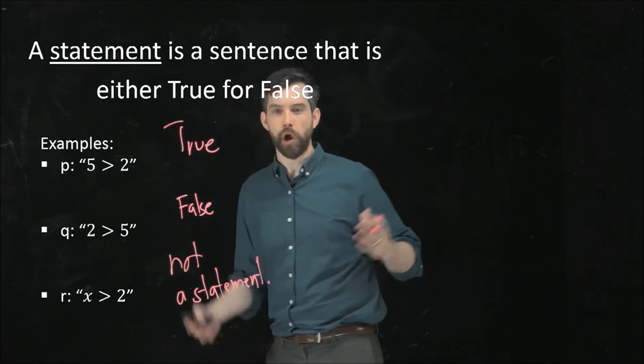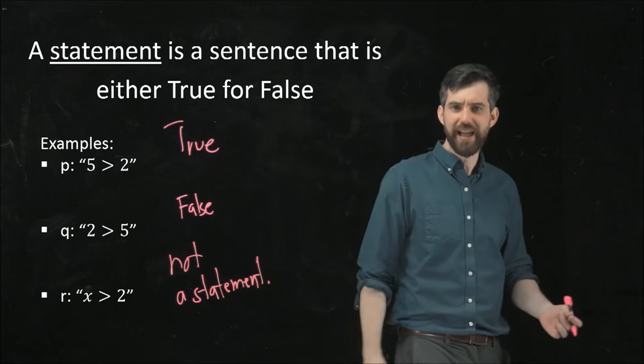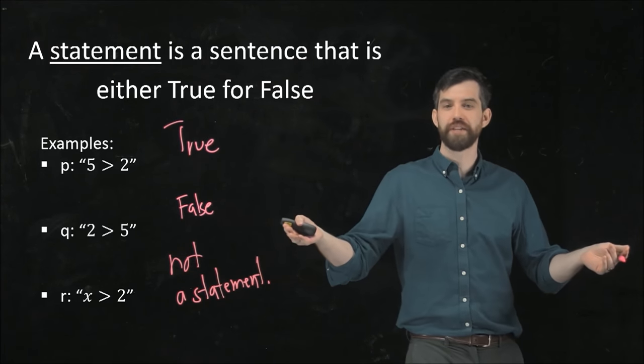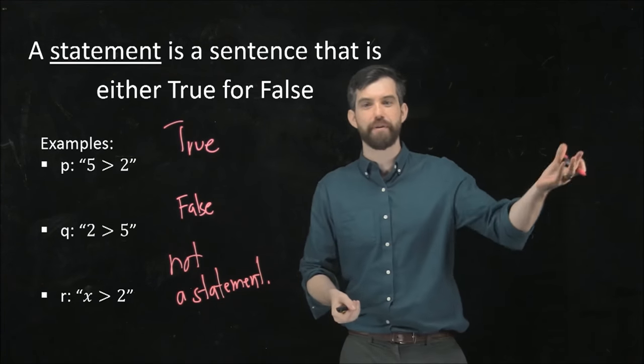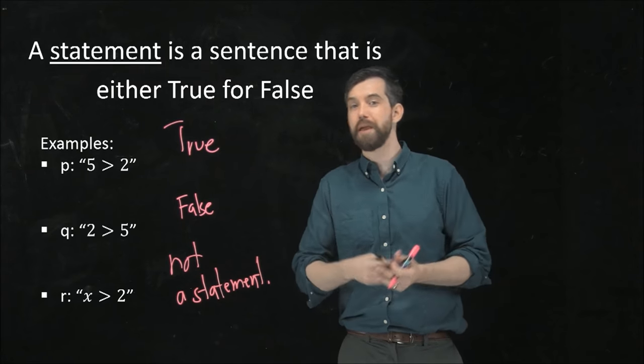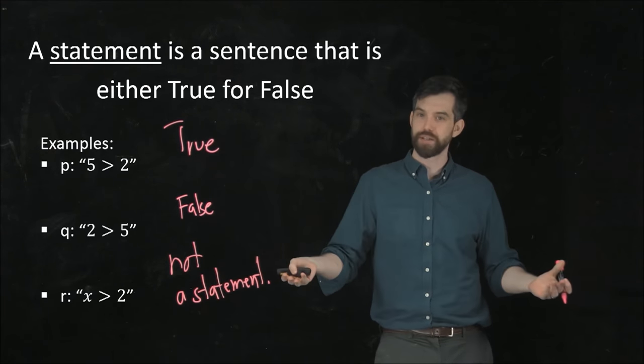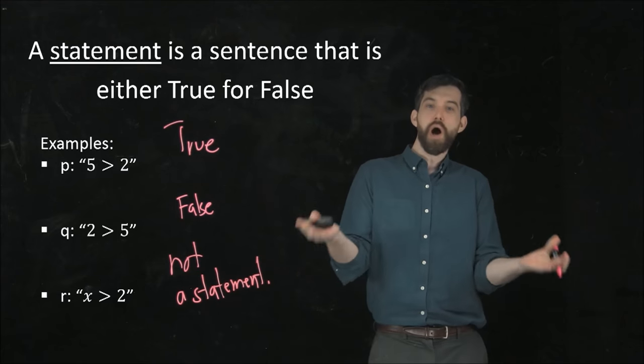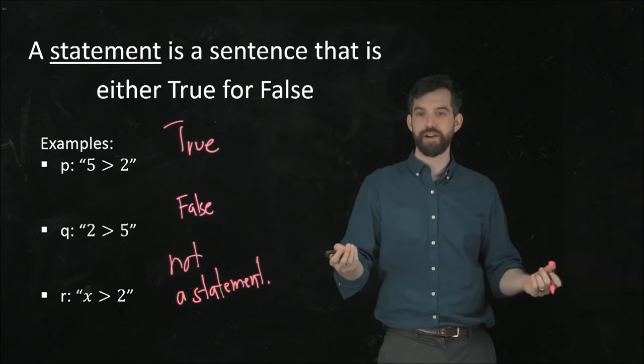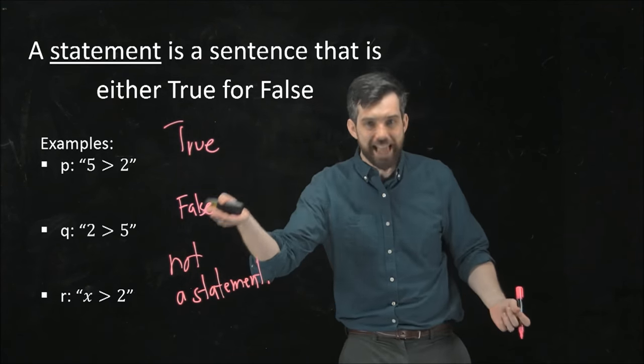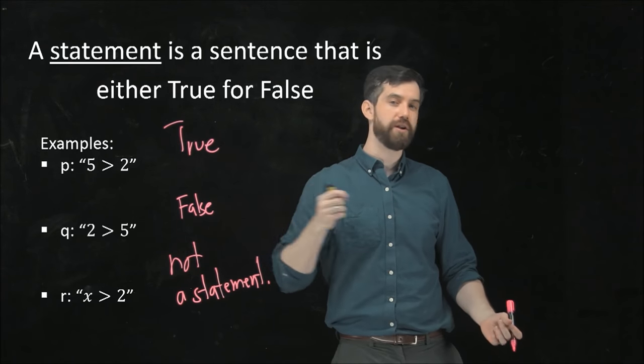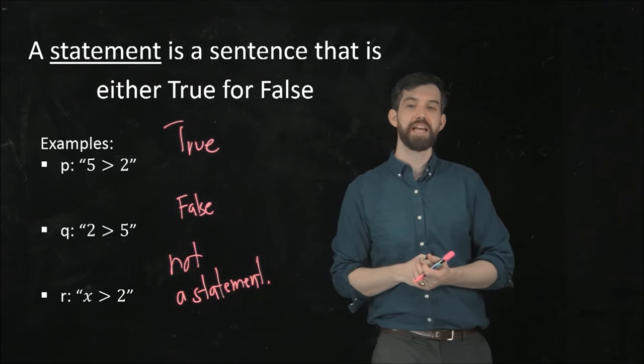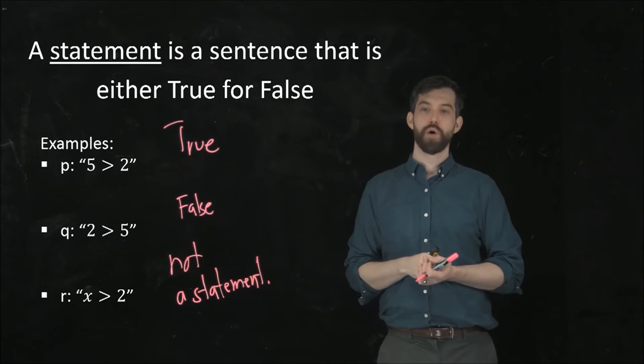It might be that in some larger context we know what the value of x is. We may have previously solved that x is a placeholder for the number 5, in which case it would be true. Or maybe x is a placeholder for 0, in which case it would be false. But if I have no context for what x is, if x is just some variable, then this sentence that x > 2 is not a statement because I don't know whether it's true or false.